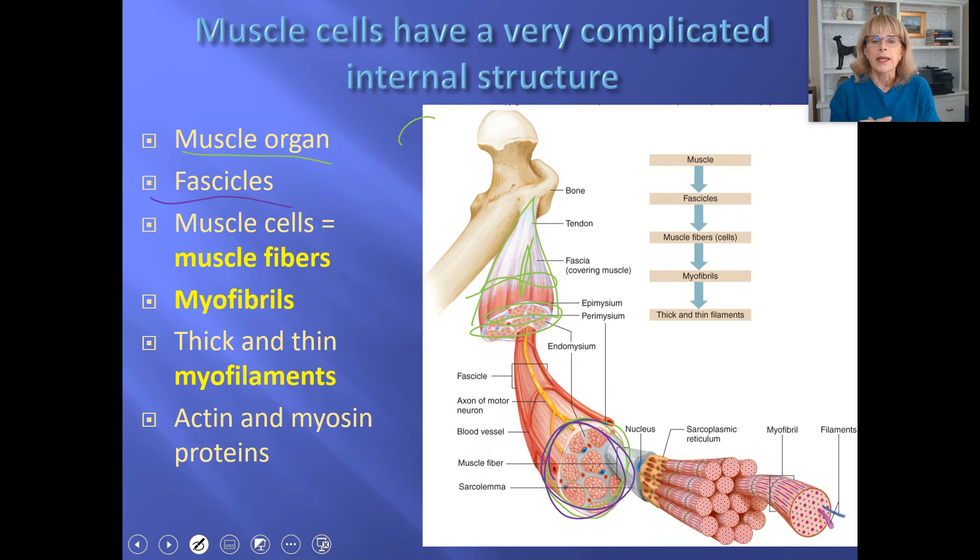A fascicle is a bundle of muscle cells. So you've got your whole muscle, the biceps or whatever, and it's divided up into fascicles. We're going to talk about motor units in a moment. I want you to remember that a motor unit is not the same thing as a fascicle. A fascicle is an anatomical distinction. A motor unit is a functional distinction. So muscles are organs. They're divided up into bundles of cells called fascicles. Each individual cell in the fascicle is known as a muscle fiber. And they usually get called muscle fibers just because they're such unusual cells that it's just easier to call them a muscle fiber.